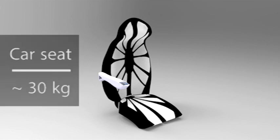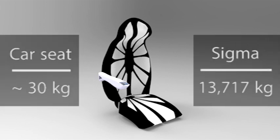A standard car seat weighs about 30 kg. Our seat weight is 13.717 kg. How do we do this?